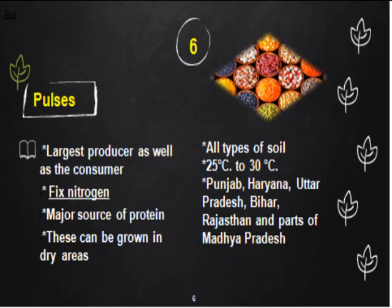India is the largest producer and largest consumer of pulses. Pulses are leguminous crops grown as rotational crops because they can fix nitrogen in the soil, helping to restore soil fertility. They are rich in protein and need less moisture — they can survive in dry conditions and grow in all types of soil. Temperature should range between 25 to 30 degrees Celsius. Major producing states are Punjab, Haryana, Uttar Pradesh, Bihar, Rajasthan, and Madhya Pradesh.